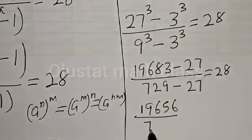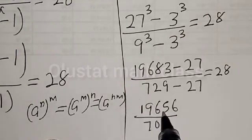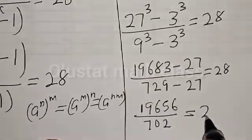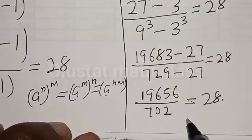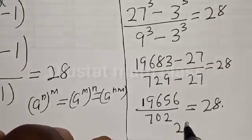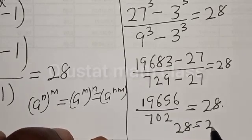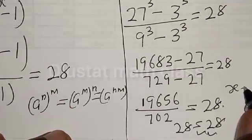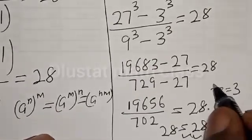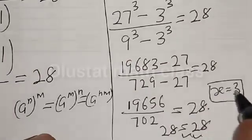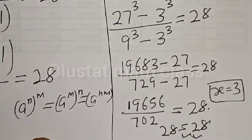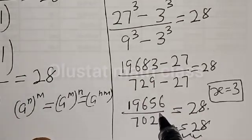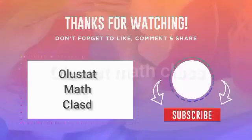That gives 19656 divided by 702, which is equal to 28. Therefore we have 28 is equal to 28. We satisfy the given equation at s is equal to 3. If you have enjoyed the class, please don't forget to like, share, comment, and subscribe. You can see that the left hand side which is equal to 28 is equal to the right hand side. Thank you.